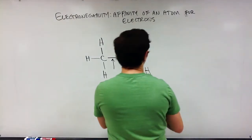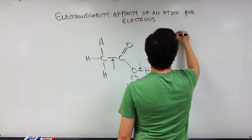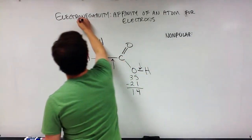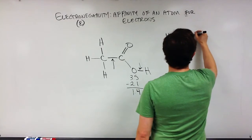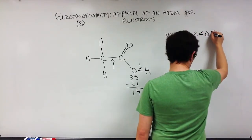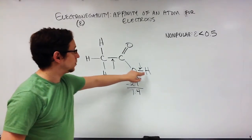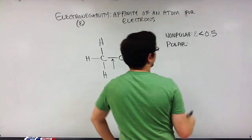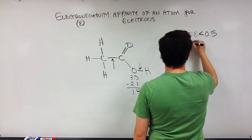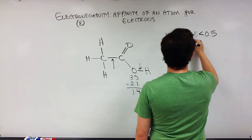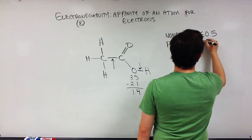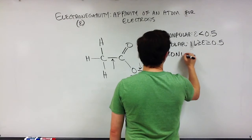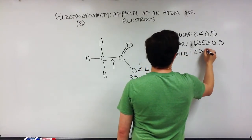Those ranges are as follows. For a nonpolar covalent bond, you're looking for an electronegativity difference — which we'll denote with a squiggly 'e' — that is less than 0.5. For a polar covalent bond, the difference in electronegativity is greater than or equal to 0.5 and less than or equal to 1.6. And finally, for an ionic bond, the electronegativity difference is greater than 1.6.